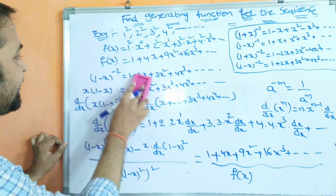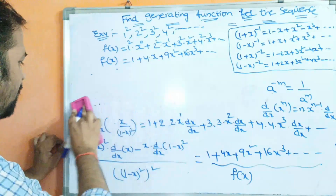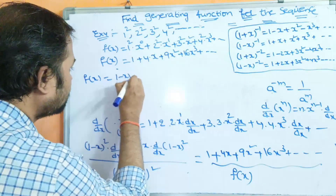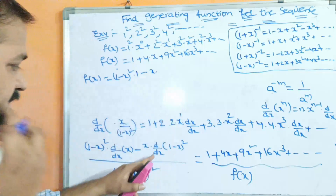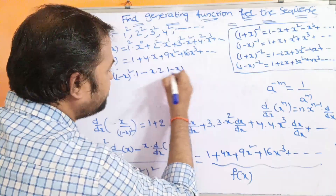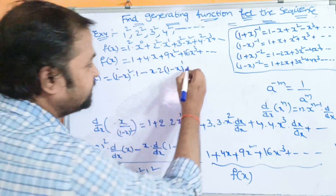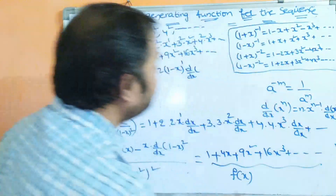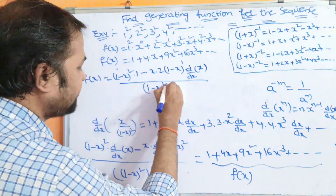Now let us solve the last example. The last example is 0², 1², 2², 3² and so on. So f(x) = 0²·x⁰ + 1²·x¹ + 2²·x² + 3²·x³ + ... = 0 + x + 4x² + 9x³ + ... giving x + 4x² + 9x³ and so on.